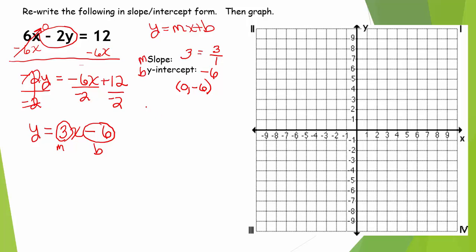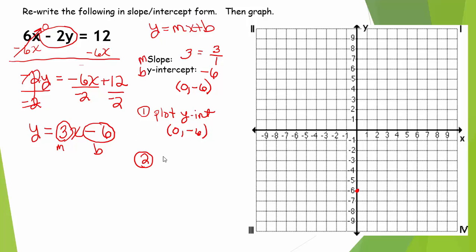Now I'm ready to graph. Step one: plot the y-intercept. My y-intercept is (0, negative 6), so I plot that point first. Step two: use the slope to find additional points. We're going to use our slope — 3 over 1 — to find additional points on the line.